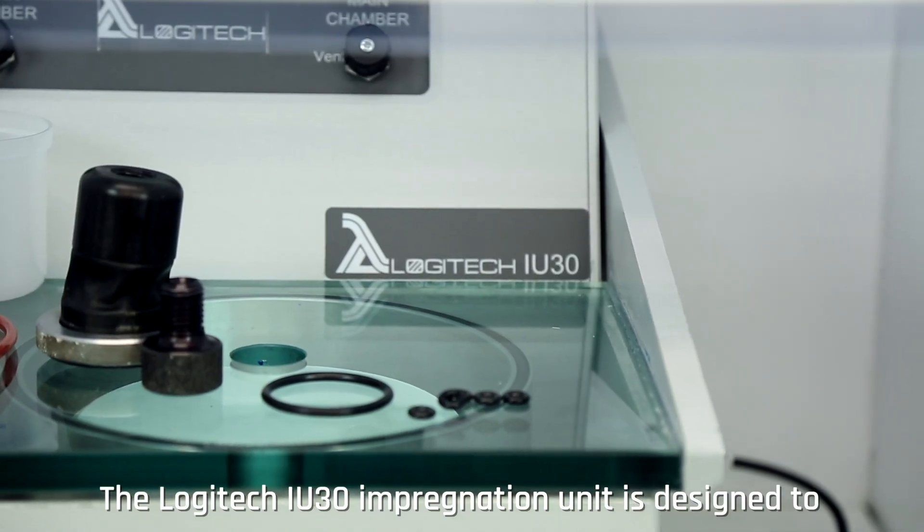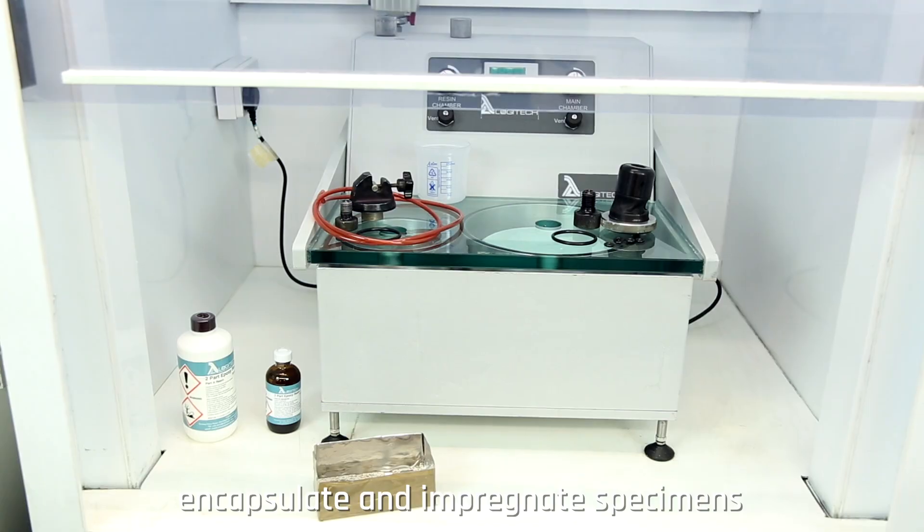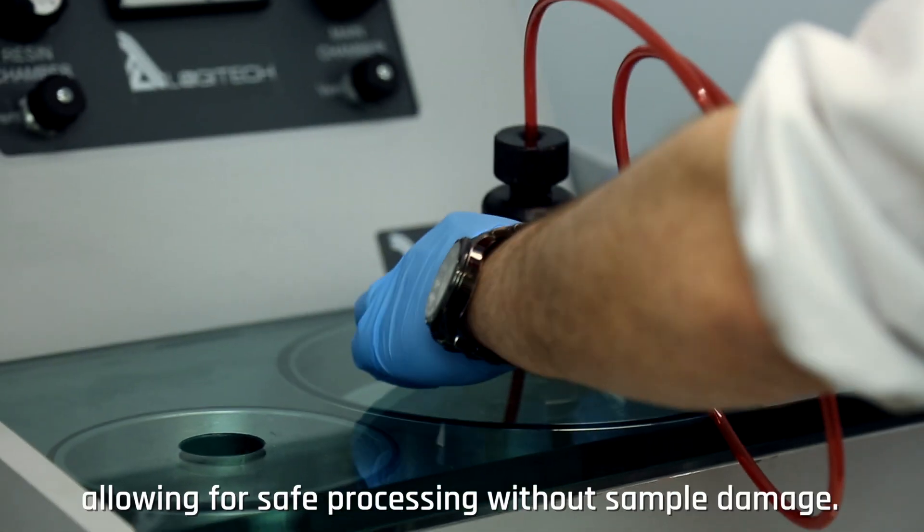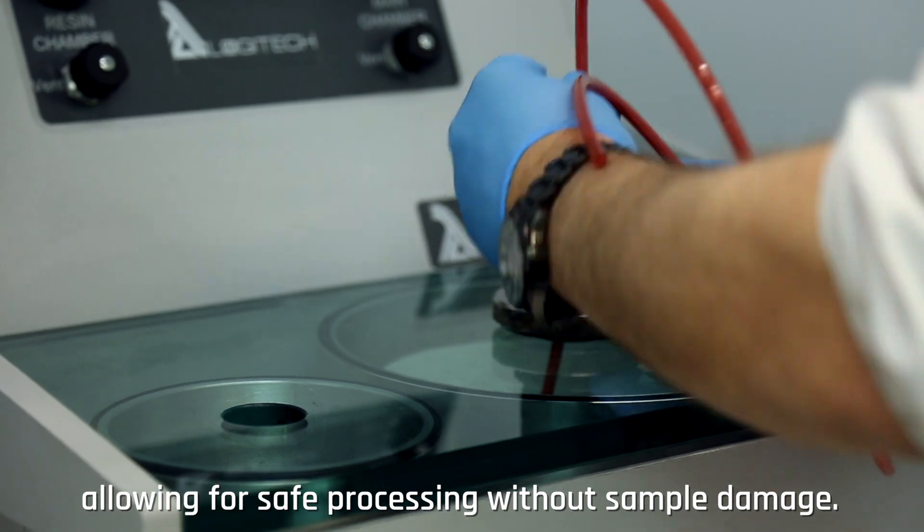The Logitech IU-30 impregnation unit is designed to encapsulate and impregnate specimens with synthetic Logitech resins, allowing for safe processing without sample damage.